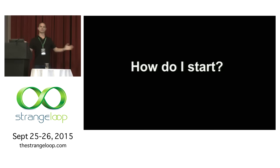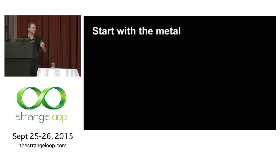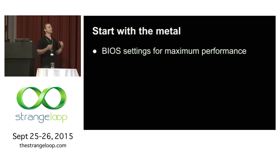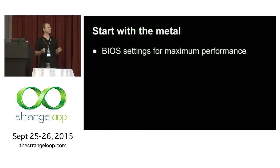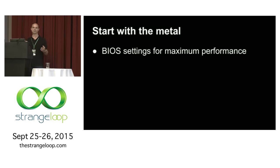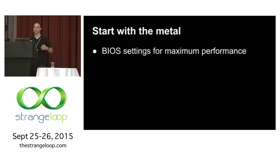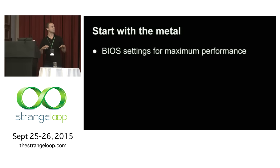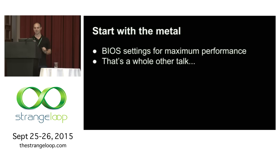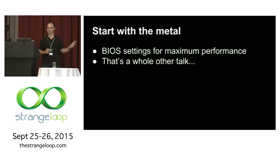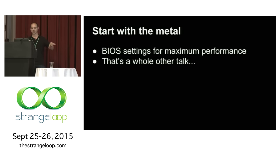How do we start? Begin with the metal. BIOS settings on a server will not be configured for maximum performance — most vendors ship with power saving features enabled for large data center usage, which increases system latency and jitter. We need to change the BIOS settings. This is what we want to do first because measuring these effects on the software side is harder. If you know you've got maximum performance enabled in your BIOS, you'll be in a good place to start.